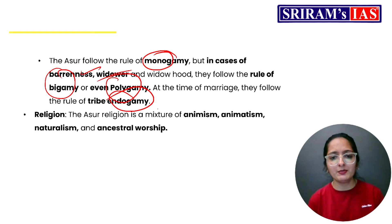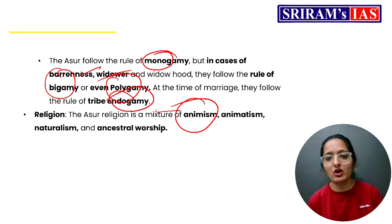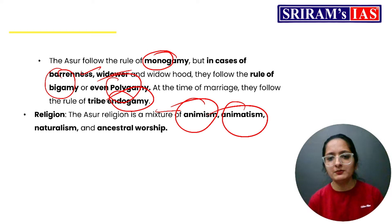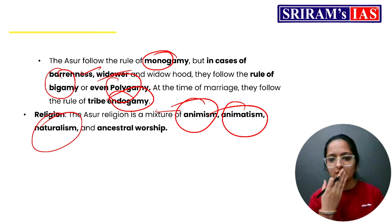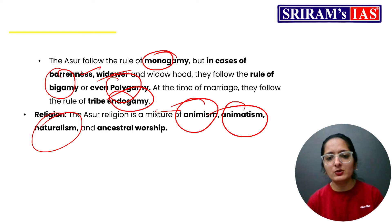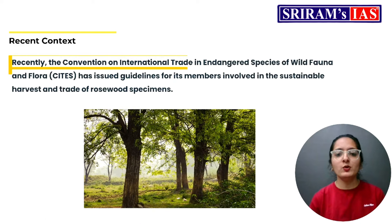Their belief system is a mixture of animism — where objects, places, and creatures are believed to have spiritual essence — animatism, where they believe in a general spiritual force that exists in the world, naturalism, involving worship of natural elements like trees, rivers, and mountains, and ancestral worship, where they honor and worship their ancestors. So it is a mixture of all of these.